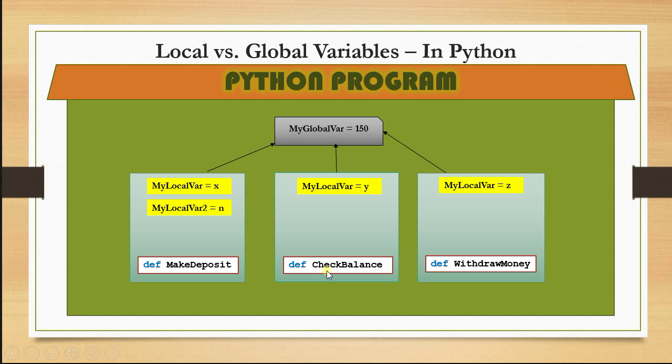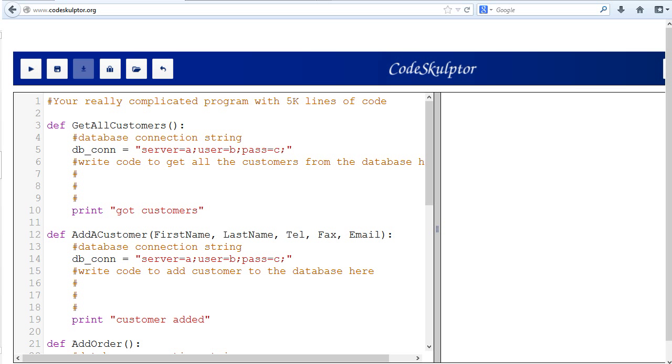And then multiple functions, such as make a deposit, check the balance, withdraw money, could all use that global variable that you have defined so that the data it contains will be maintained correctly when various actions or events happen. Let's consider another example.